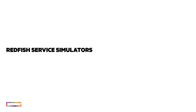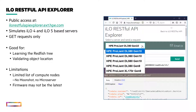Let's now introduce two Redfish simulators. The first one is the public web-based ILO RESTful API Explorer. From its graphical user interface, you can select a type of server and then perform GET requests. However, it is not possible to perform actions or modify resources in those simulated servers. This simulator can be used to learn and understand how Redfish models and represents the listed servers.